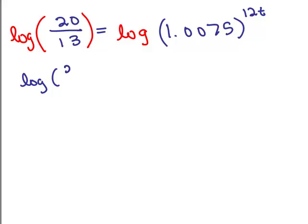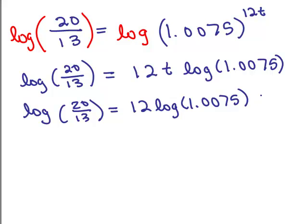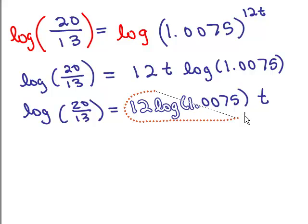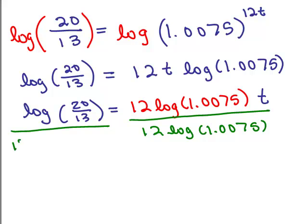I've got this log of 20/13, and we're going to put 12T out to the front times the log of 1.0075. The trick here is you're trying to solve for T. So I've got the log of 20/13, and this is 12 log of 1.0075 times T. What I want you to note is that this part here is simply the coefficient of T. So we're just going to divide both sides by that number.